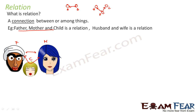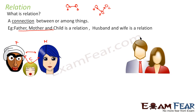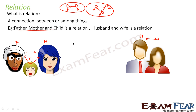Similarly, if you want to see a relation among two objects — this is husband and this is wife — so there is a relationship between husband and wife. This guy is husband for this lady, and this lady is wife. So there is a relationship established between two identities. Relationship is nothing but connection between or among things. 'Between' refers to two objects, and 'among' refers to more than two.